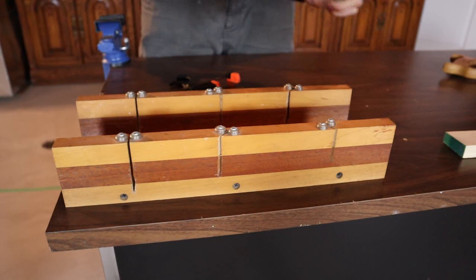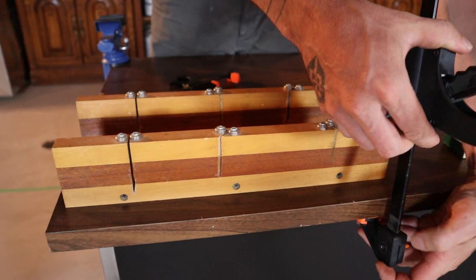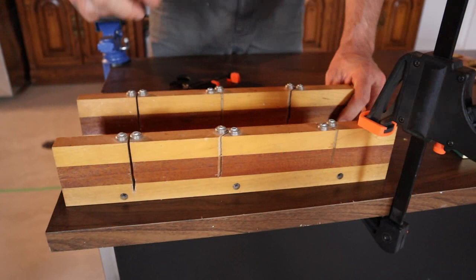A lot of miter boxes you'll buy will come with clamping points—this older one doesn't—but the first thing you want to do is clamp down your miter box, and you want to clamp it in such a way that your clamps aren't going to be in the way of your material you're cutting or your saw.